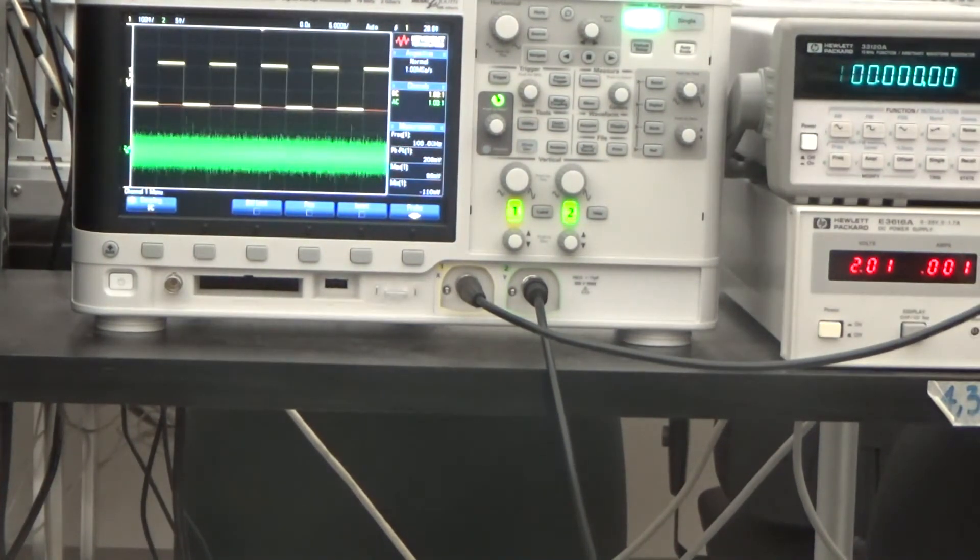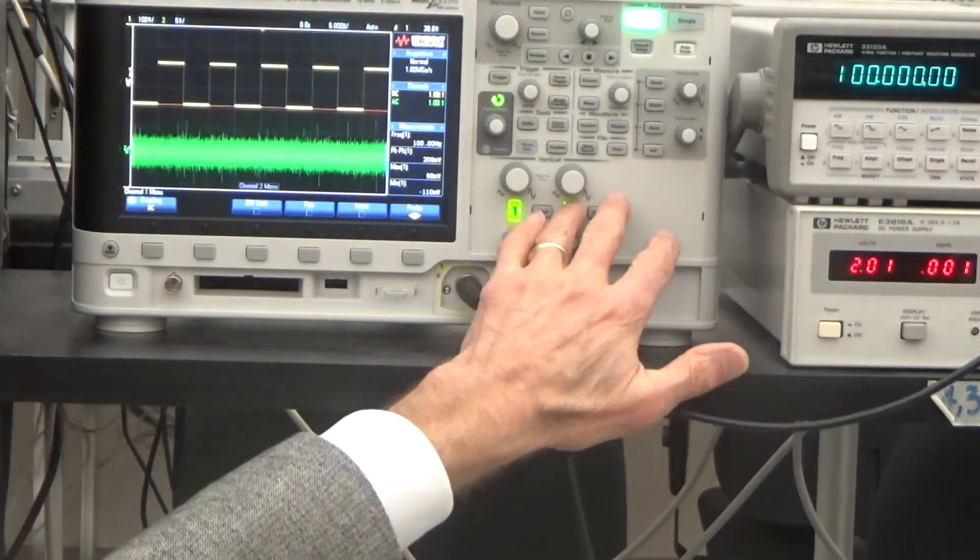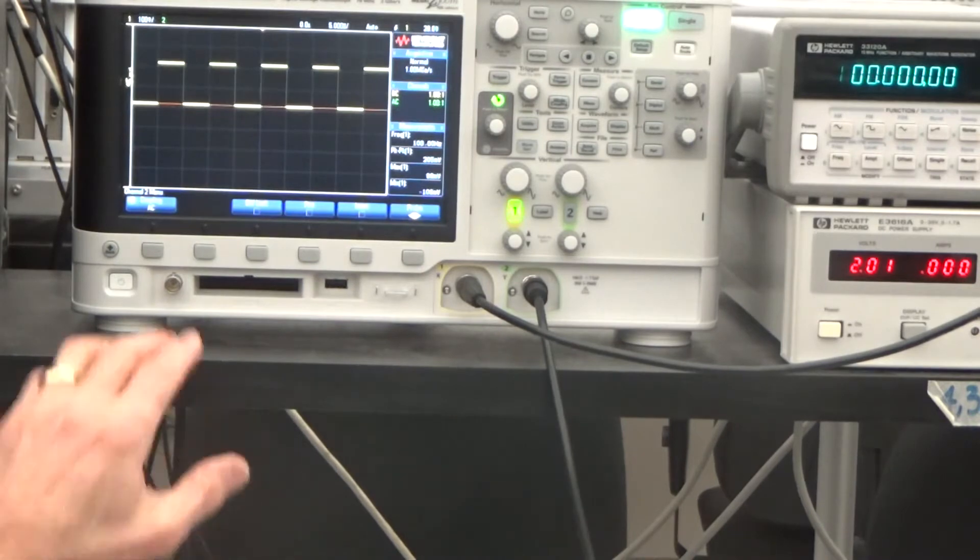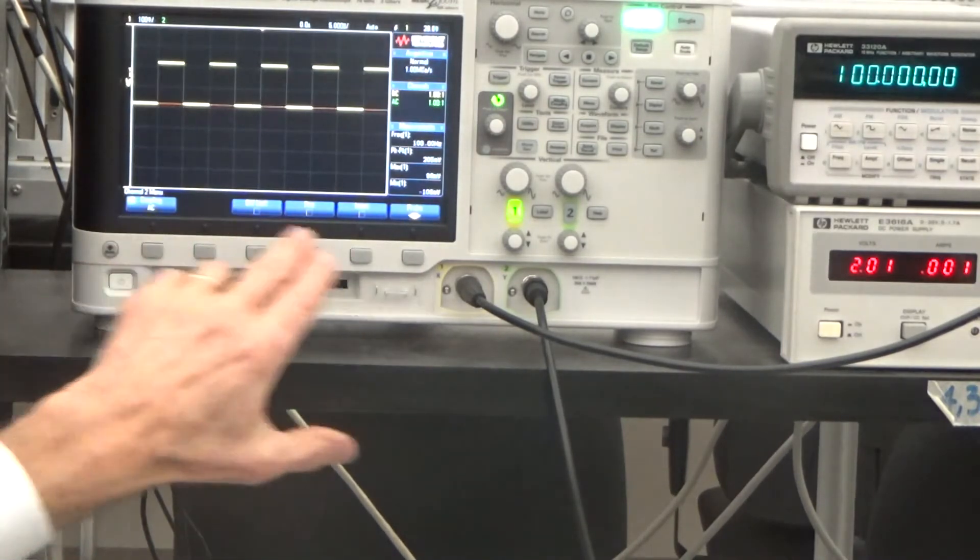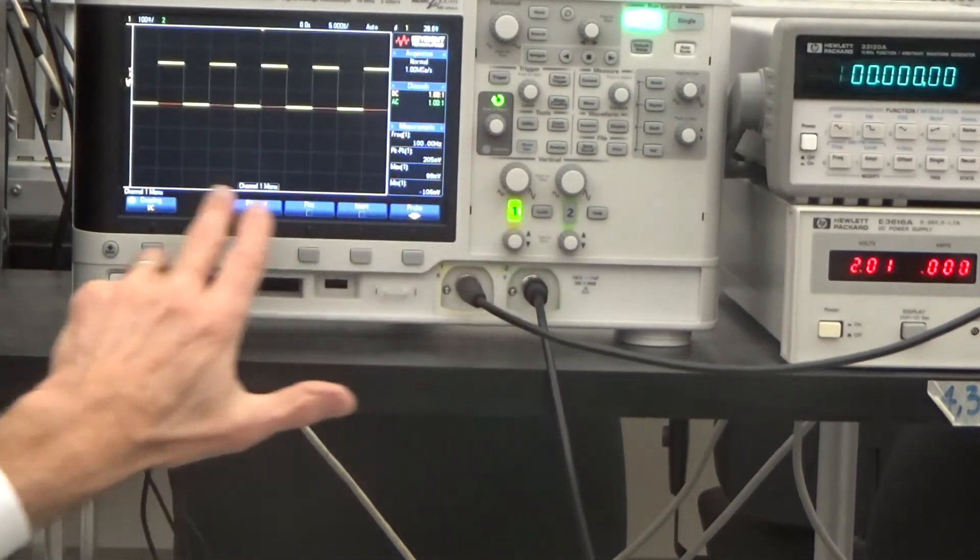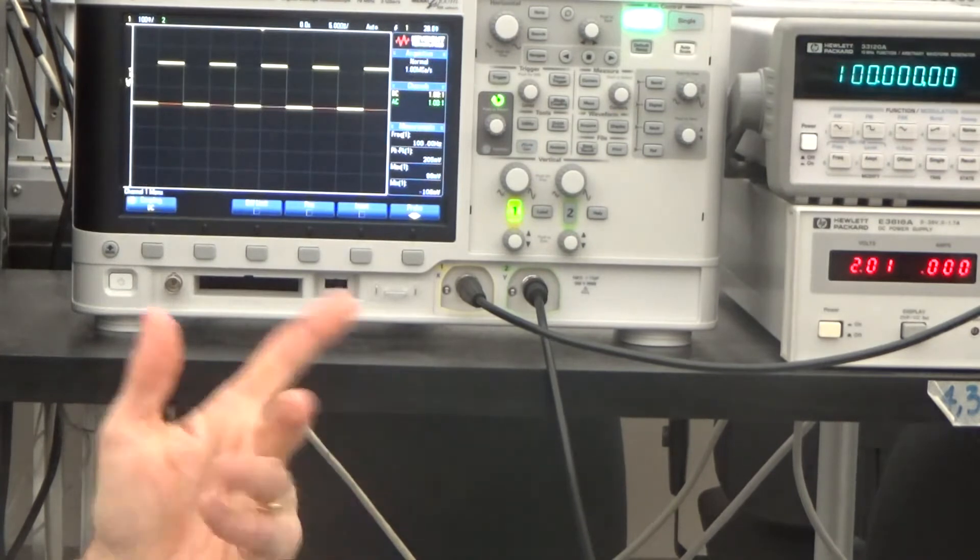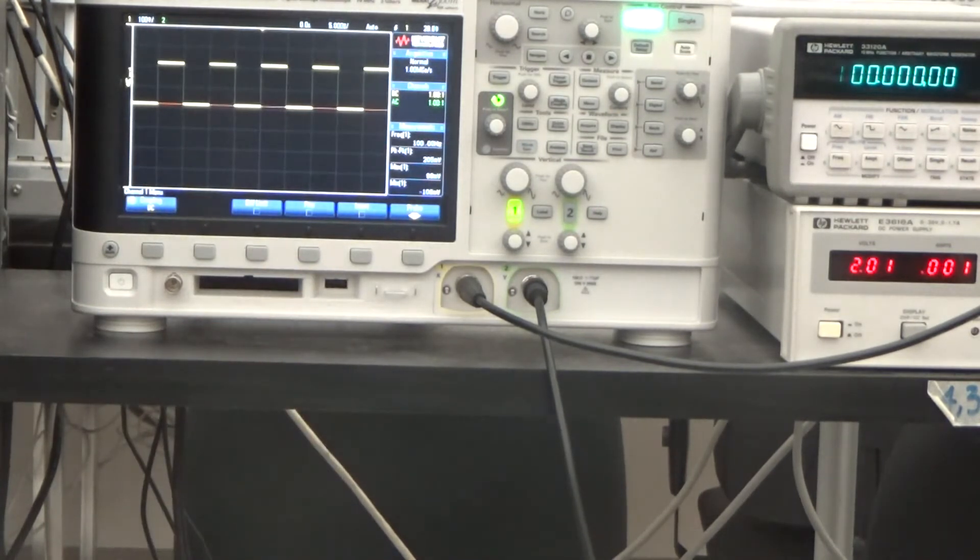Okay. Now, so I want to talk about the function generator output. So I'm going to turn off the channel 2 signal. And we can just look at this square wave. Now this is, if I go to the channel 1 menu here, we can see that we are DC coupled here. And we get the nice 100 hertz square wave.